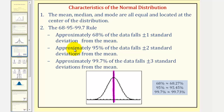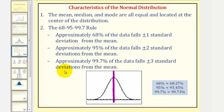Approximately 95% of the data follows plus or minus two standard deviations from the mean. And approximately 99.7% of the data follows plus or minus three standard deviations from the mean. Our text uses these percentages, though some texts may use more accurate percentages, given here.